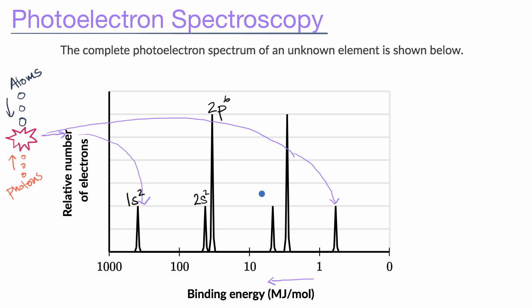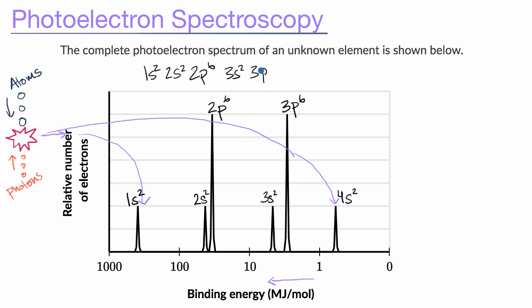This looks like it's going to be 3s two. And then this next spike looks like 3p six. That subshell gets completely filled, and we have one more spike after that. That spike seems to have roughly the same number of electrons as all of the other s subshells. We know from the Aufbau principle that the next we would fill is 4s, and it looks like there are two electrons there, because this spike is about the same height as the other filled s subshells. And so just like that, we're able to use the photoelectron spectrum to come up with the electron configuration of this mystery element.